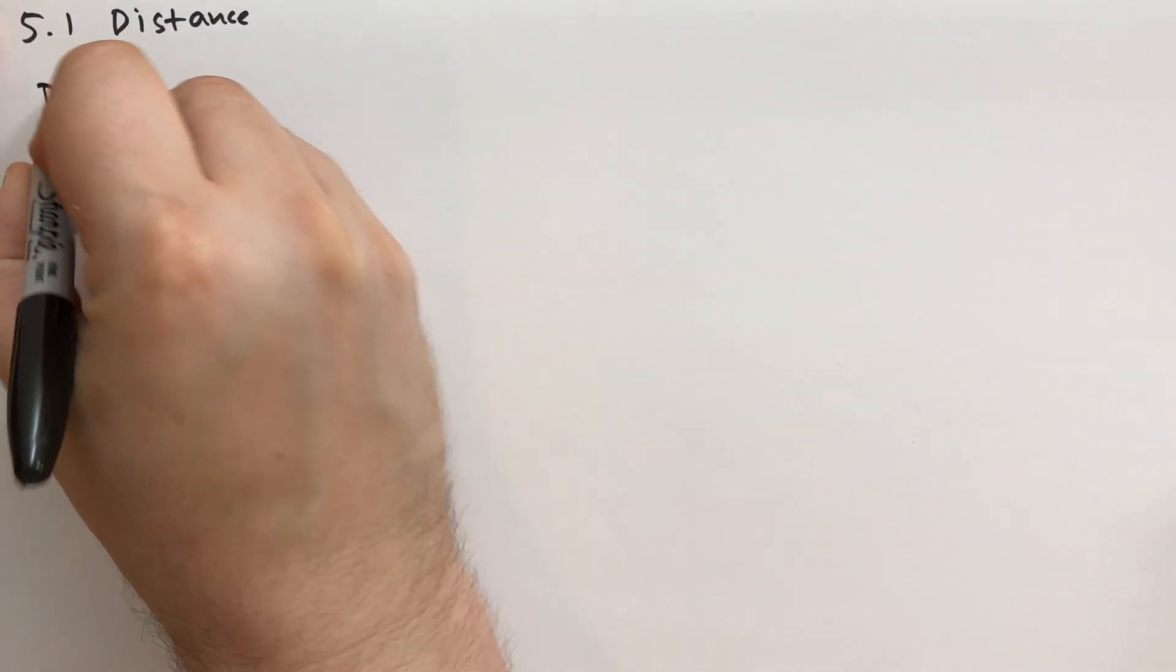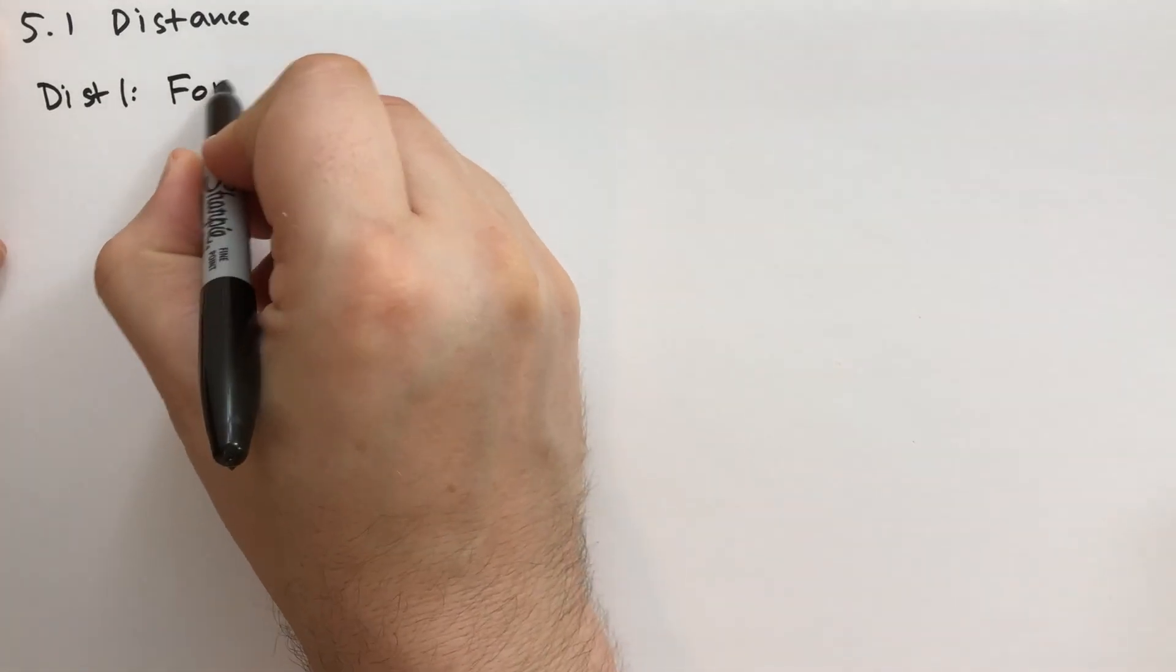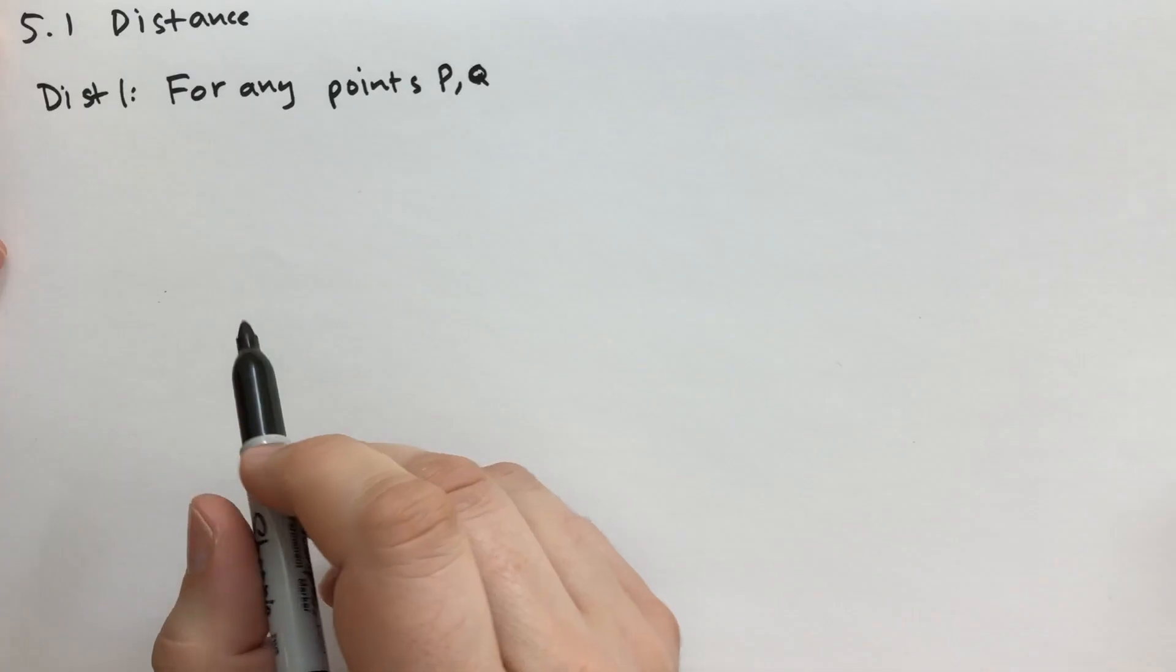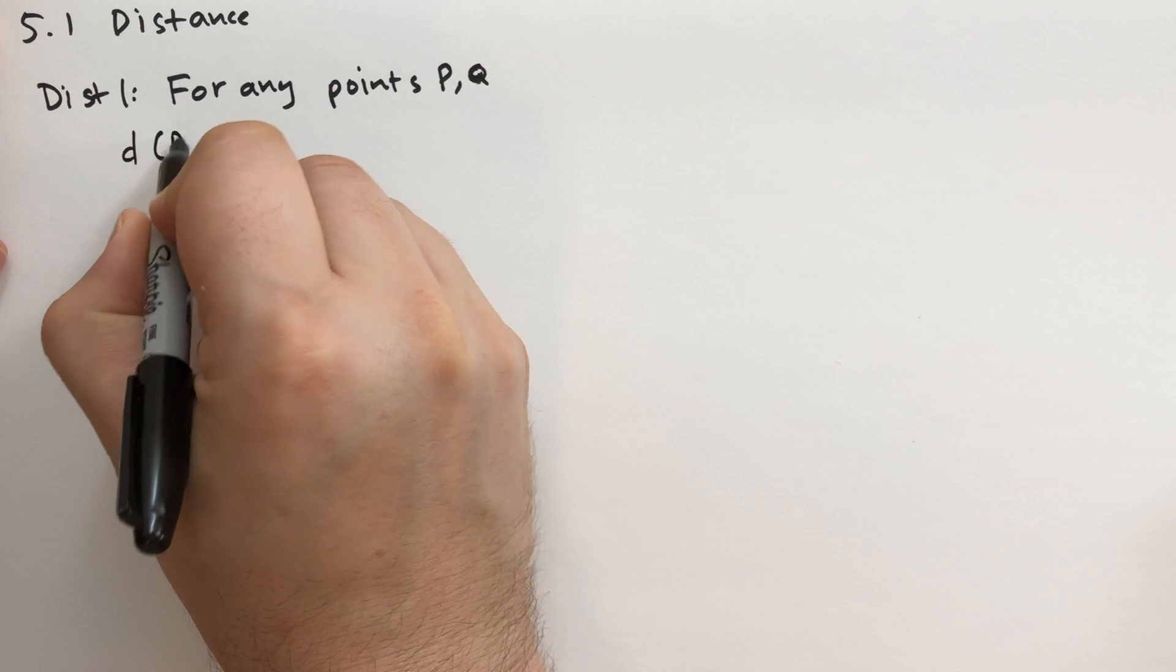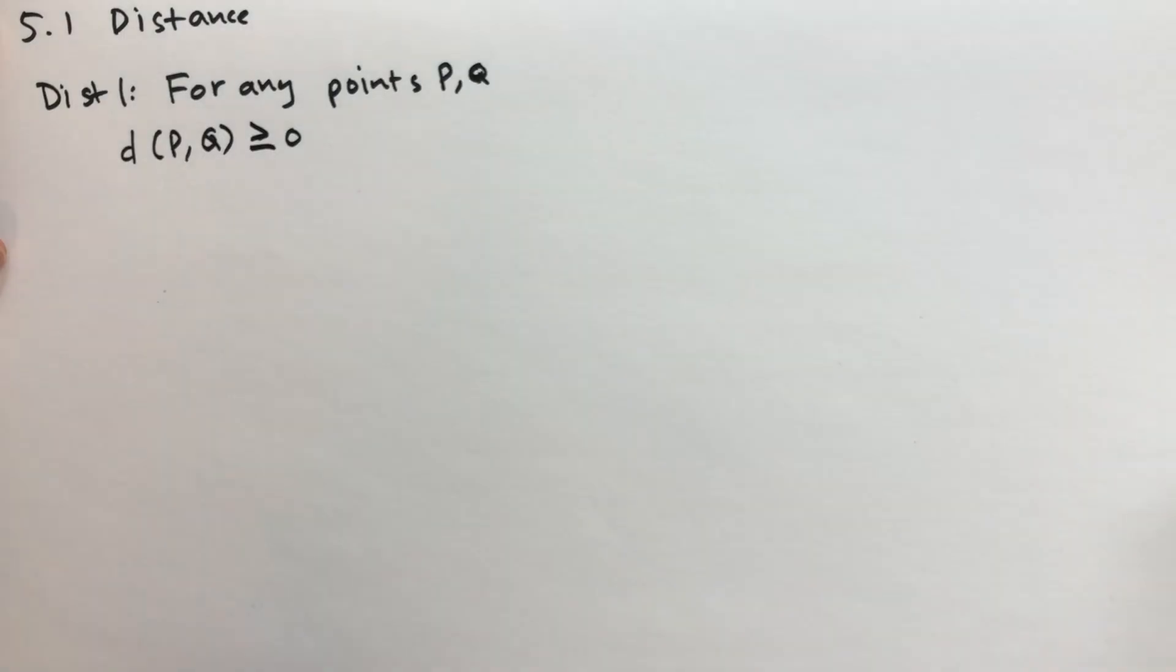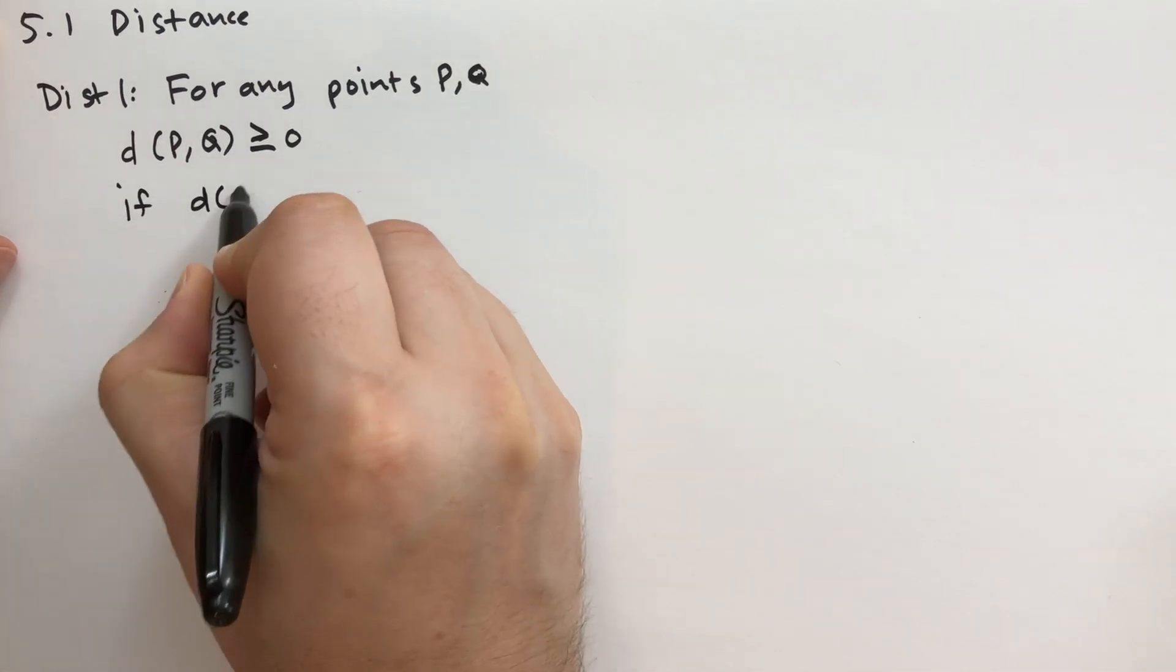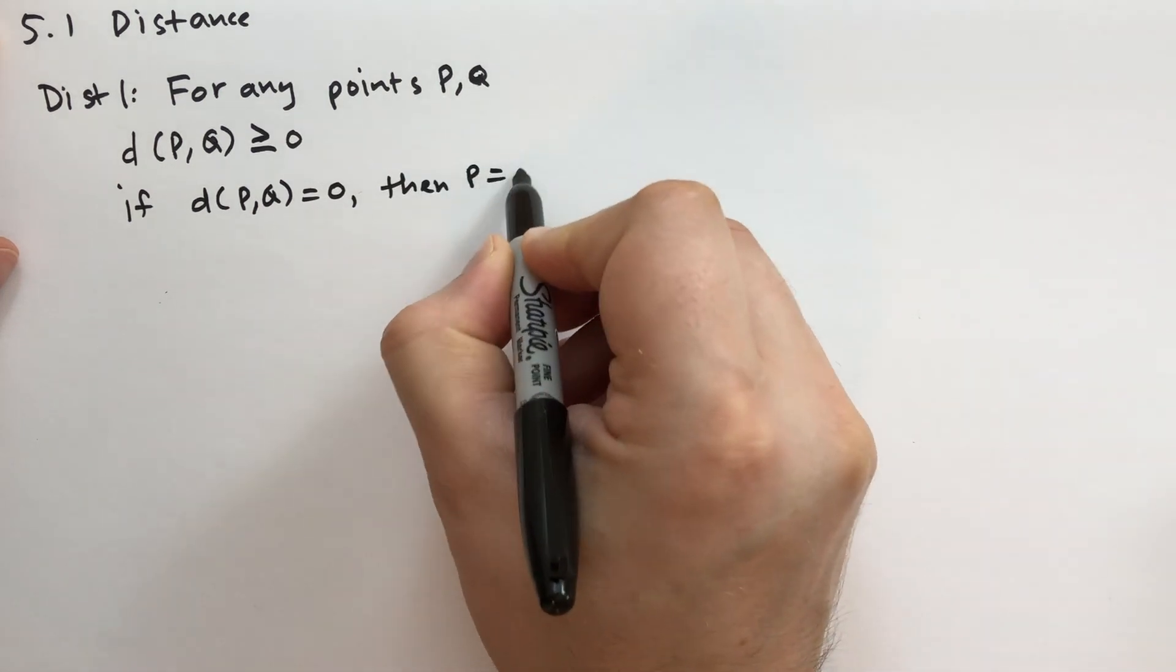The first assumption we're going to have is called Dist 1 in the book. Dist 1 says that for any points P and Q, there exists a distance d(P,Q) that's greater than or equal to zero. Distance can't be negative but it can be zero and it can be positive. In fact we assume that if distance of P and Q is equal to zero then P and Q must be the same points. P equals Q.